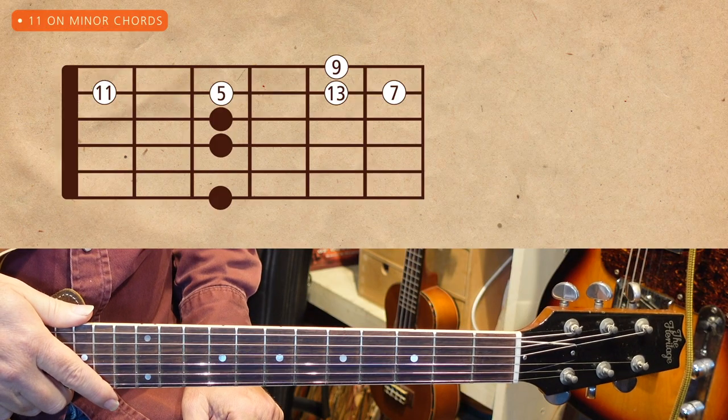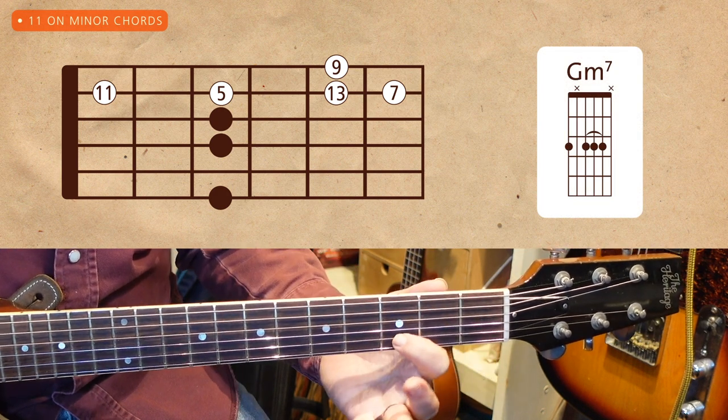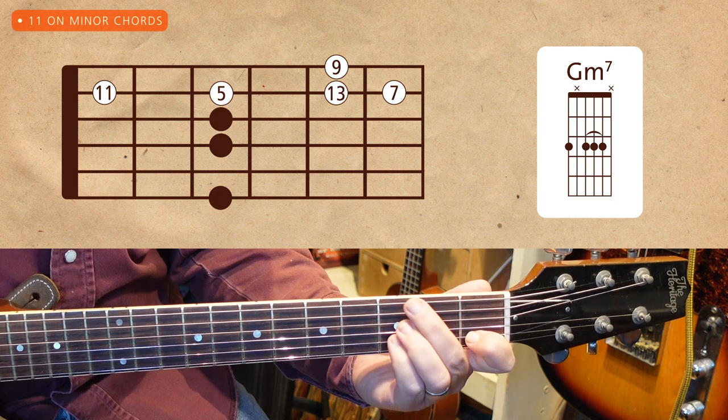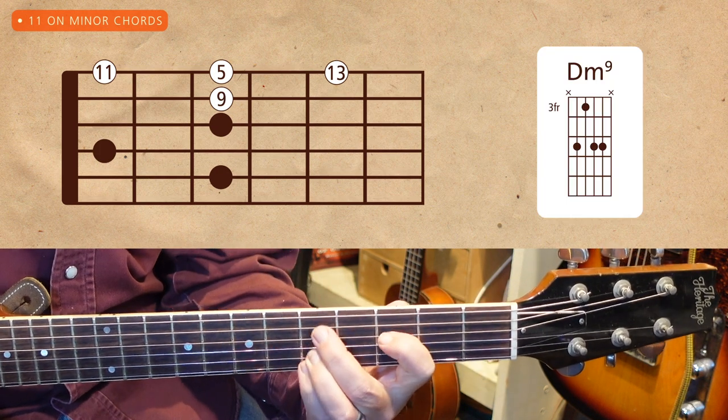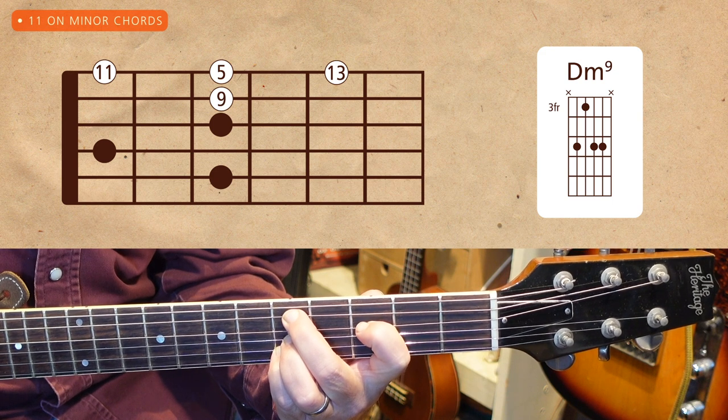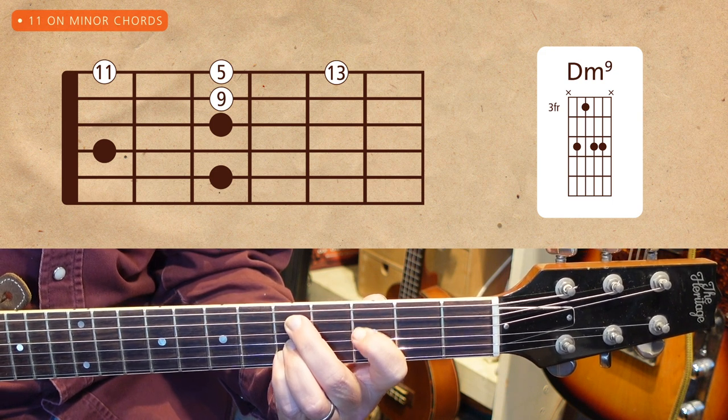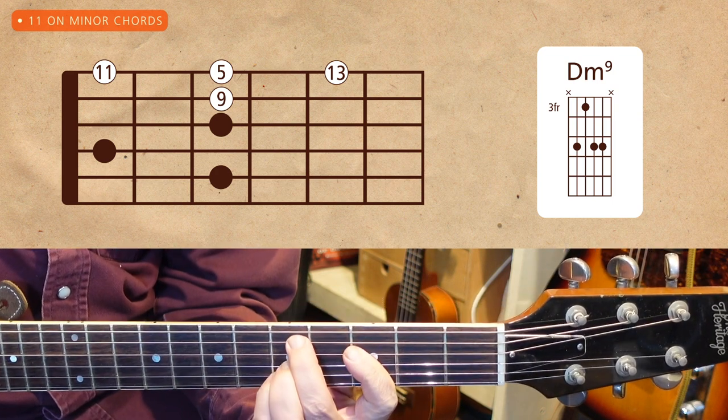A couple more things: when we first looked at extensions, I said the eleventh — that's the fourth note of the scale — isn't generally included in major chords because it clashes with the third. In minor chords though, there's no such issue with the eleventh, because the third is lower and there's no risk of that nasty dissonance. You'll often see a minor eleventh chord — it's an interesting way to embellish a straight minor chord. Going back to our G minor seven on the bottom string, the eleven will be here behind the fifth, so let's get rid of that fifth — and we have G minor eleven. Remember that lovely D minor nine shape based on the fifth string? Well how about adding an eleven above that? In D, the eleven is G. We can play that by barring with the first finger.